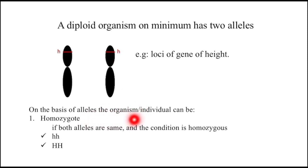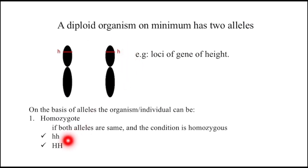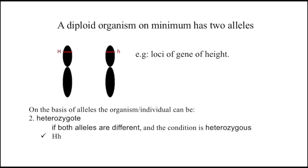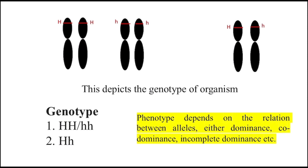On the basis of alleles, the organism or individual can be homozygote if both alleles are the same, and the condition is called homozygous. If both alleles are small h, the organism is homozygote. Likewise, if both alleles are represented with capital H, the organism is homozygote. A diploid organism may have different alleles on both chromosomes — if both alleles are different, for example capital H and small h, then the organism is heterozygote and the condition is heterozygous.